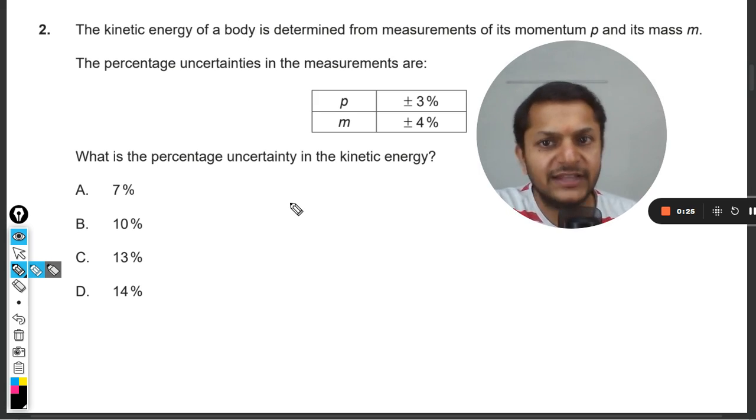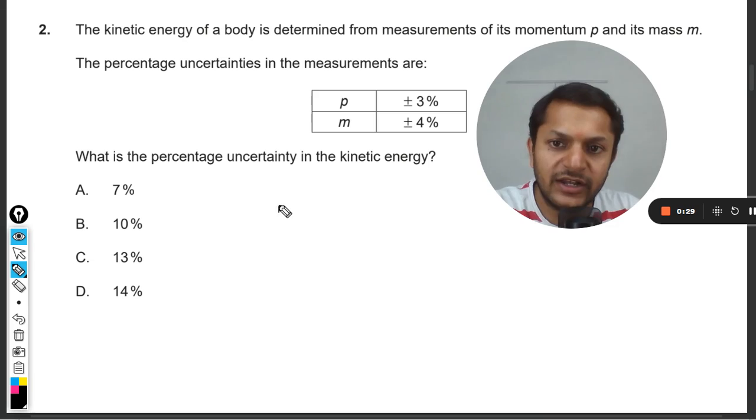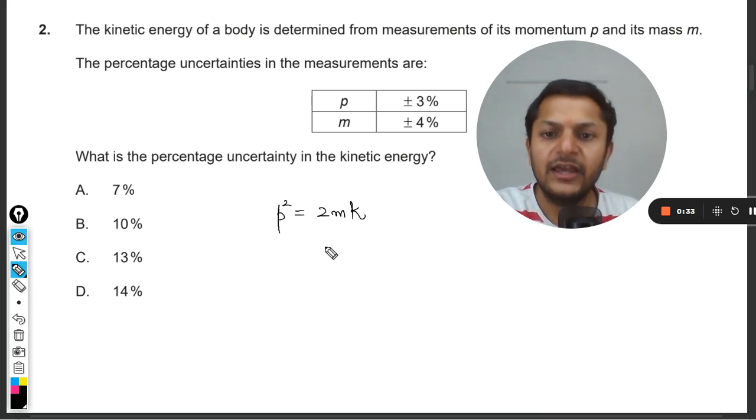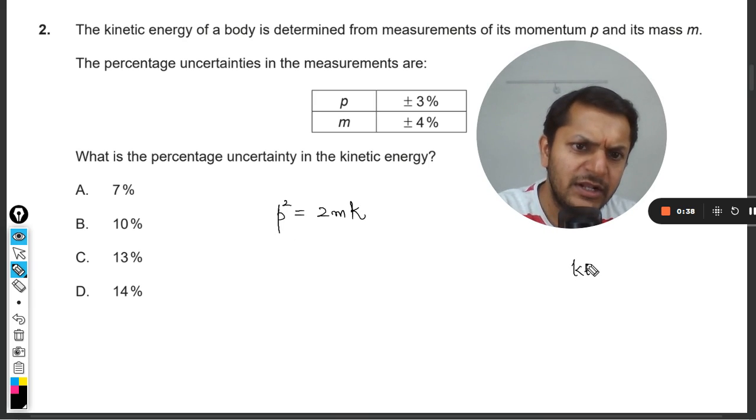So we have to first in such cases write the formula that we are going to use. There is this formula p² equals 2mk, where p is the momentum, m is the mass, and k is the kinetic energy. This is very easily derivable.